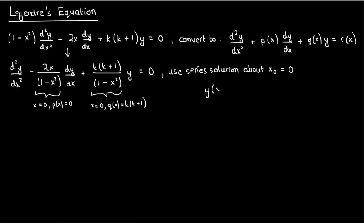Since we're using the regular series solution method, our solution y(x) is given by the infinite series: y(x) equals the sum from n equals 0 to infinity of aₙ times x to the n. Our task is to substitute y(x) and its derivatives into the ODE and find formulas for the coefficients aₙ. So let's take the first and second derivatives of y.